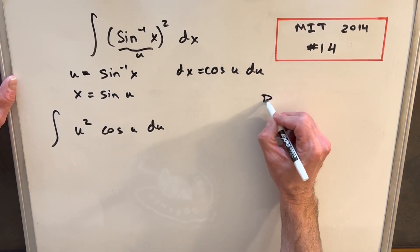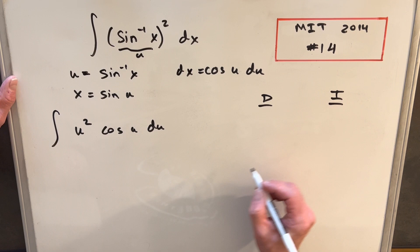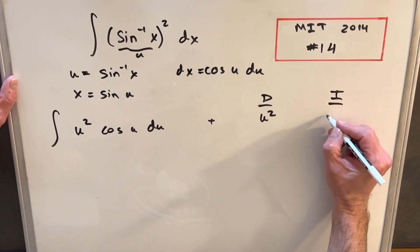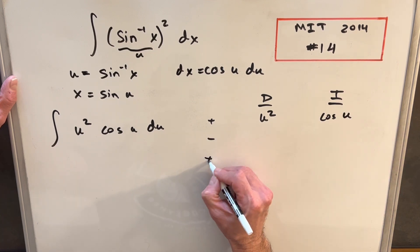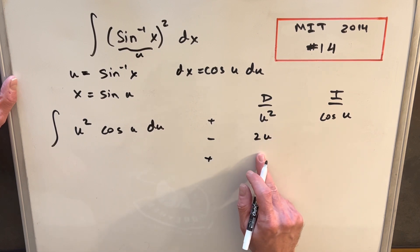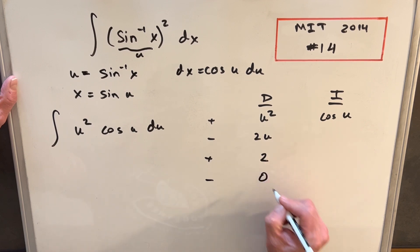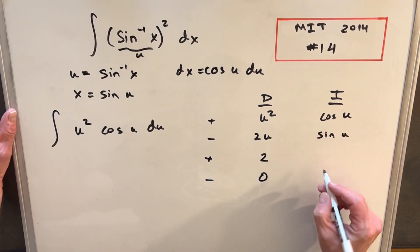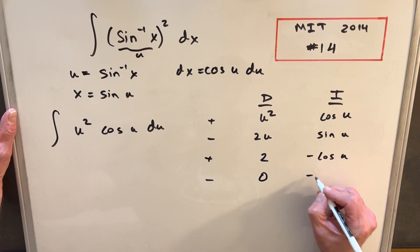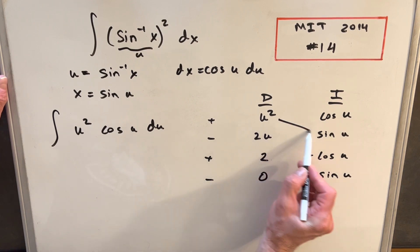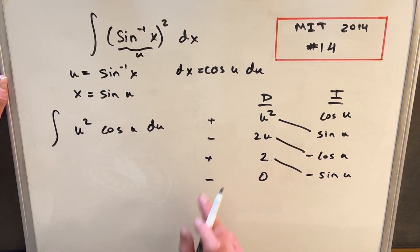So what we'll do is for integration by parts, we're going to do the DI method, tabular integration. We're going to differentiate u squared and integrate cosine of u. Differentiating: u squared, derivative is 2u, derivative of 2u is 2, derivative of 2 is 0, and we'll stop. Then integrating cosine of u, we have sine u, integral of that is minus cosine u, and then we have minus sine u.